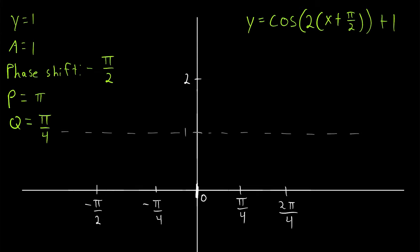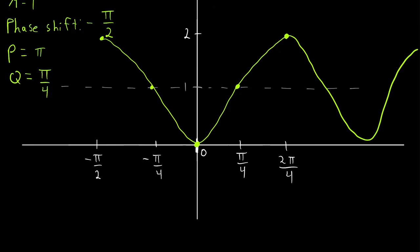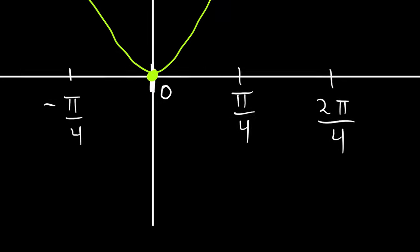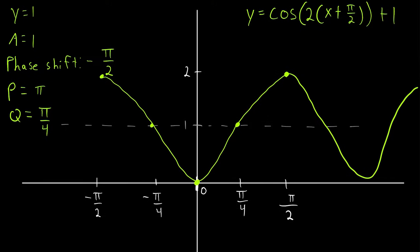This is a cosine function with a positive amplitude, so at the phase shift it starts at its peak y equals 2, goes down to the midline, down to its lowest point, back up to the midline, and back up to its highest point, completing the period. We sketch that period, and optionally sketch a bit more. Lastly, reduce fractions: 2 pi over 4 reduces to pi over 2. There's our sketch of this cosine function.